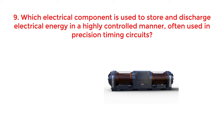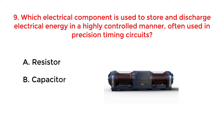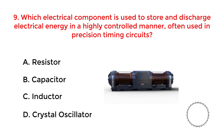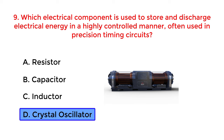Which electrical component is used to store and discharge electrical energy in a highly controlled manner, often used in precision timing circuits? A. Resistor. B. Capacitor. C. Inductor. D. Crystal oscillator. The correct answer is option D: Crystal oscillator.